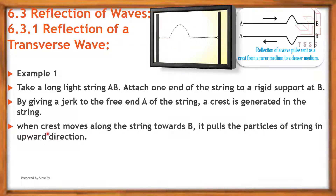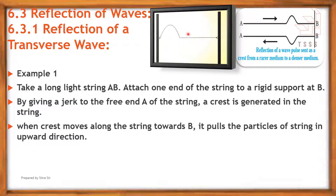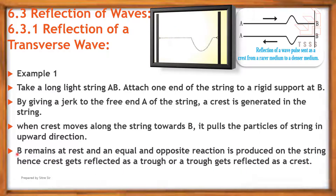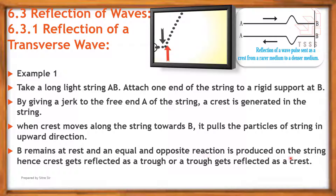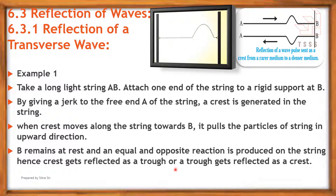When the crest moves along the string towards B, it pulls the particles of the string in the upward direction. B remains at rest and an equal and opposite reaction is produced on the string.